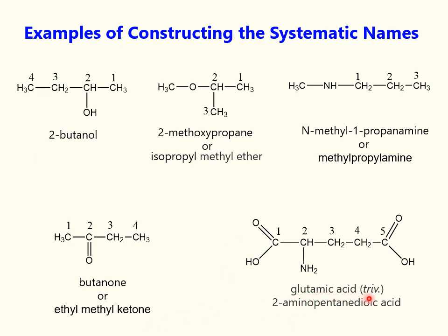Glutamic acid is one of the natural amino acids. This trivial name is adopted by the IUPAC rules as the parent name. Systematically it may be named 2-aminopentanedioic acid.